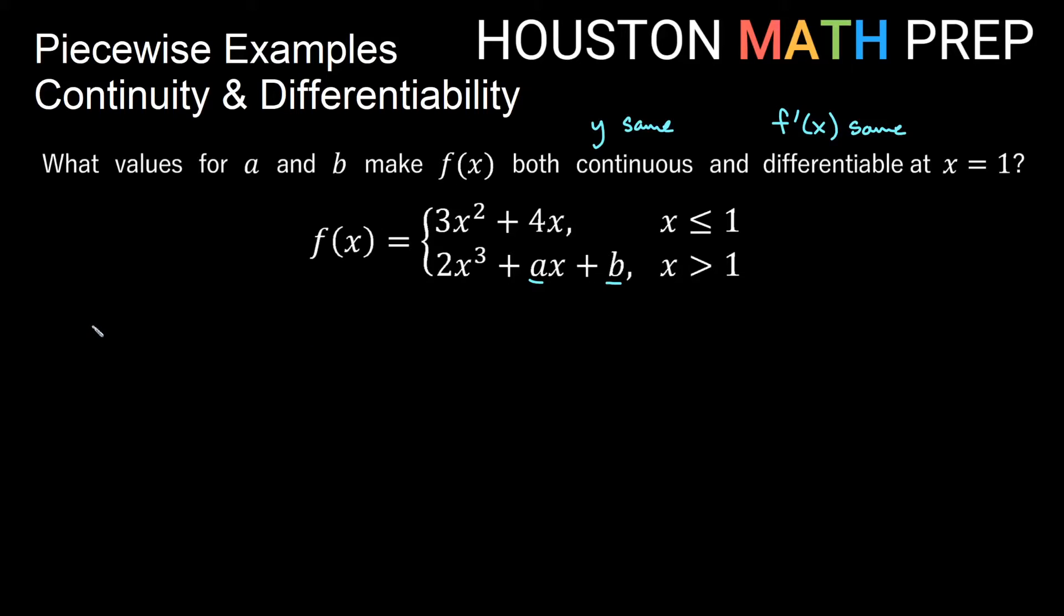So continuous means we need the y value to be the same, and then differentiable means at this x value we also need the derivative to be the same value. So we'll say we want to focus over here on making the piecewise function continuous at x equals 1. So if we do that, then we'll just plug in 1 into each of these formulas and see what would happen to make those the same. So if I plug in 1 into the first one, I would get 3 times 1 squared plus 4 times 1, and I want that to be equal to plugging in 1 to the second one. So that would equal 2 times 1 cubed plus a times 1 plus b. So if I plug in 1 everywhere, here I get 3 times 1, which is 3, and then 4 times 1 is 4. Over here I get 2 times 1, which is 2, plus a times 1 would be a, and then just b here. So I get 7 is equal to 2 plus a plus b.